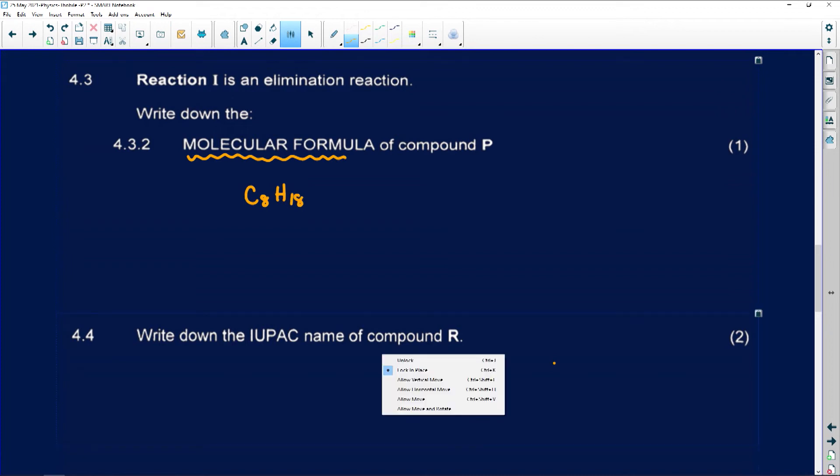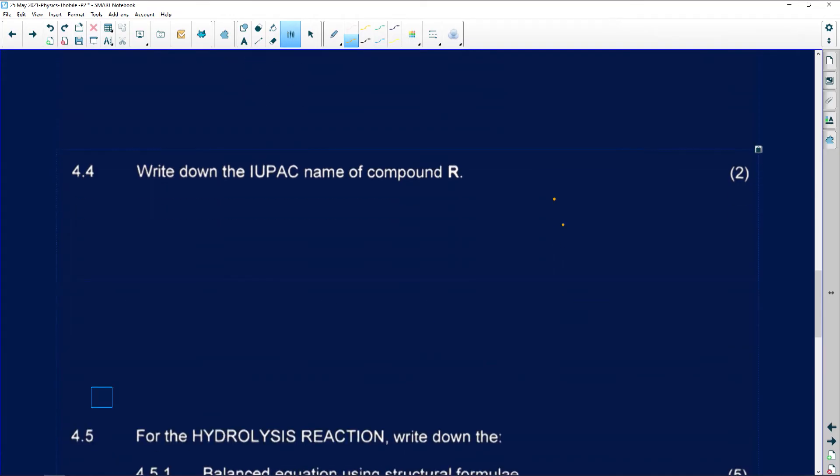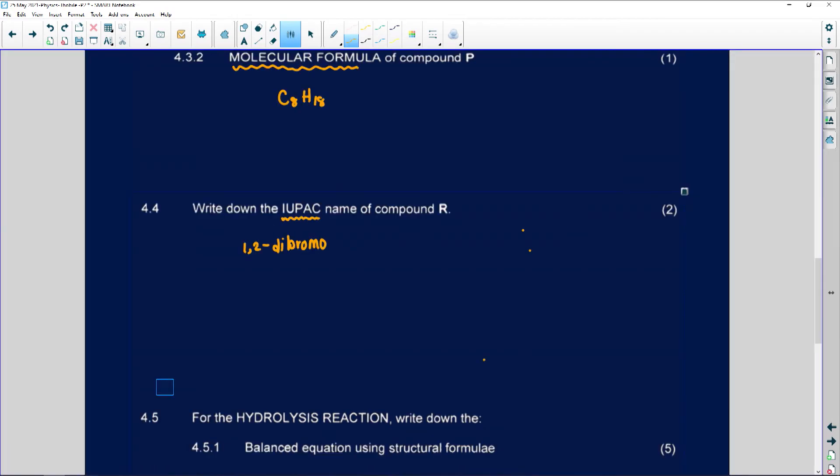Let's look at number 4.4. I must write the IUPAC name for number R. Remember, IUPAC is a system which we use to name organic molecules. We separate our numbers by commas and the word and the number by a hyphen. We put the word di which shows that there are two of the same things which is bromo. So 1,2-dibromopropane. That will be the IUPAC name for compound R.